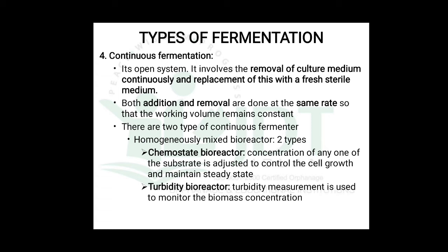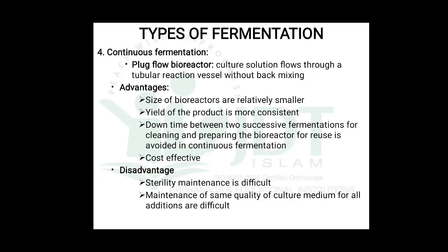In a chemostat bioreactor, the concentration of any one substance is adjusted to control cell growth and maintain steady state. In a turbidostat bioreactor, turbidity measurement is used to monitor biomass concentration. In the plug flow bioreactor, the culture solution flows through a tubular reaction vessel without back mixing.